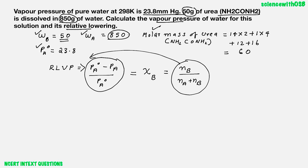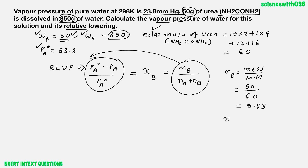We can find that. Number of moles of solute is mass of solute by molar mass of solute. Mass of solute is 50, molar mass is 60, so NB = 50/60 = 0.83. Number of moles of water is mass of water, 850, by molar mass of water, 18. On calculating, you will get NA = 47.22.